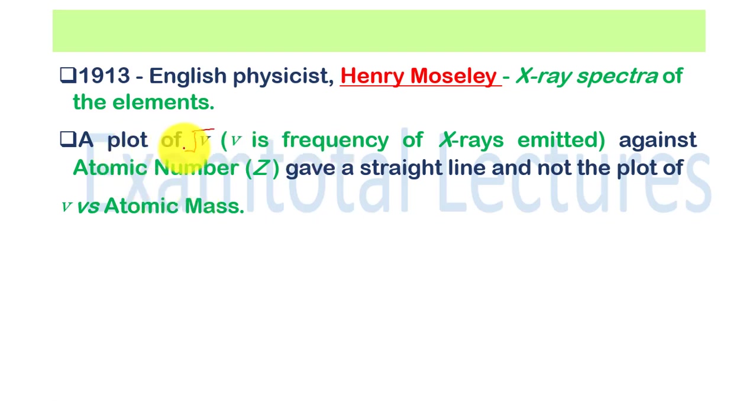The plot he made was in two ways. One plotting was square root of nu, the frequency, against atomic number. When he made this plot of square root of frequency against Z that is atomic number, it came in a straight line. Whereas the plot of nu against atomic mass was not straight. From this it was found that atomic number is the fundamental property.